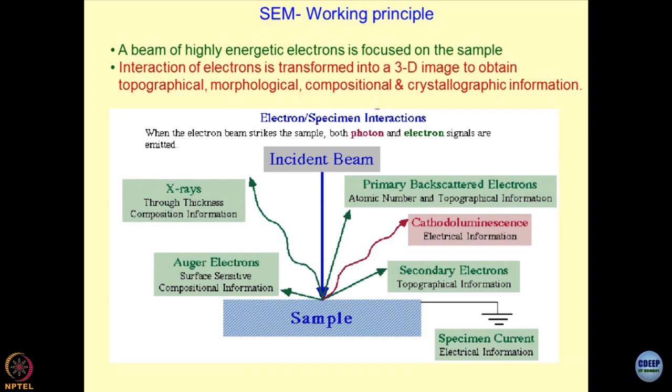The working principle of SEM is quite simple. You take the sample and bombard it with electron beams. Whatever beams scatter out — x-rays, Auger electrons, primary backscattered electrons, secondary electrons — you can analyze and filter these beams to obtain the required information.